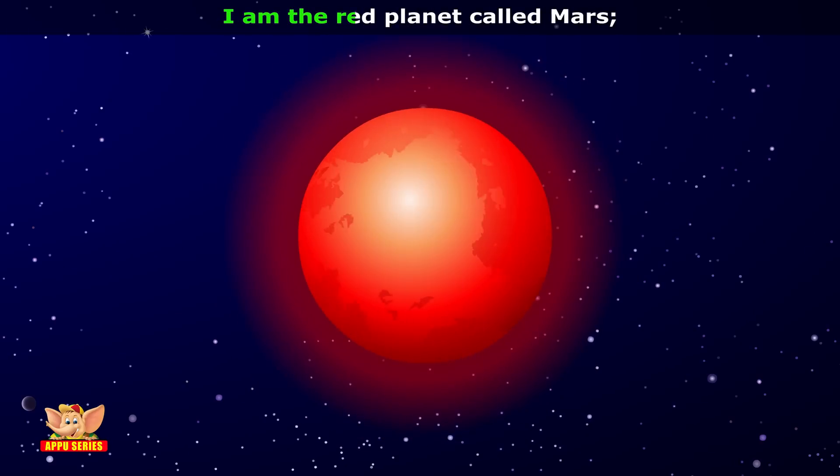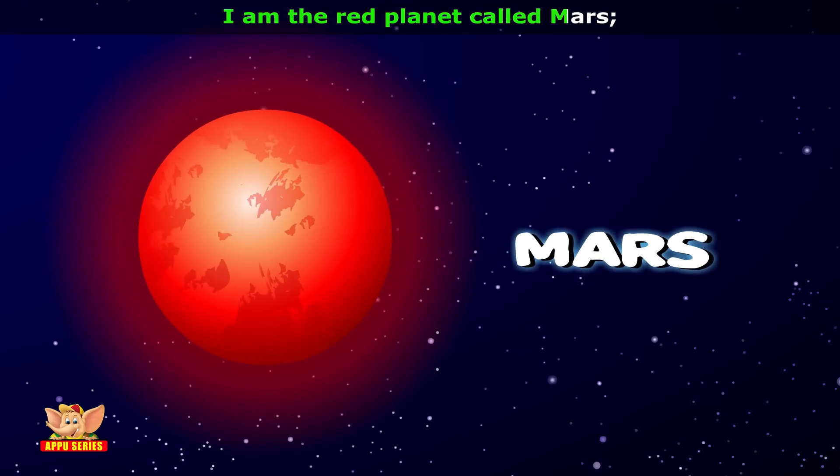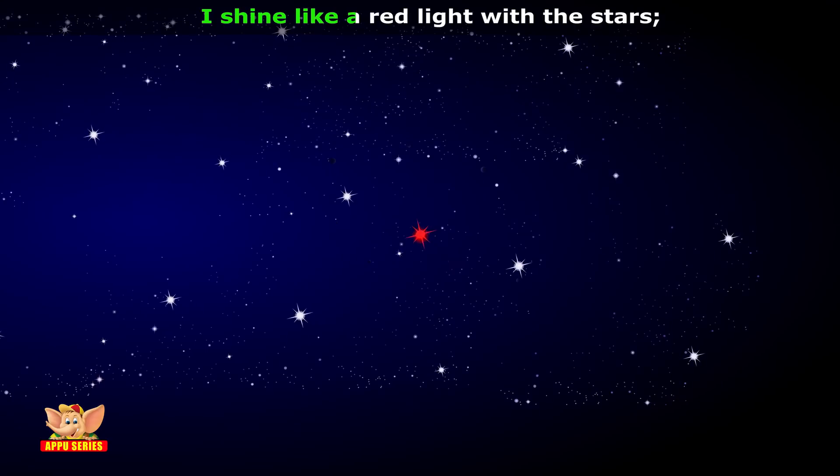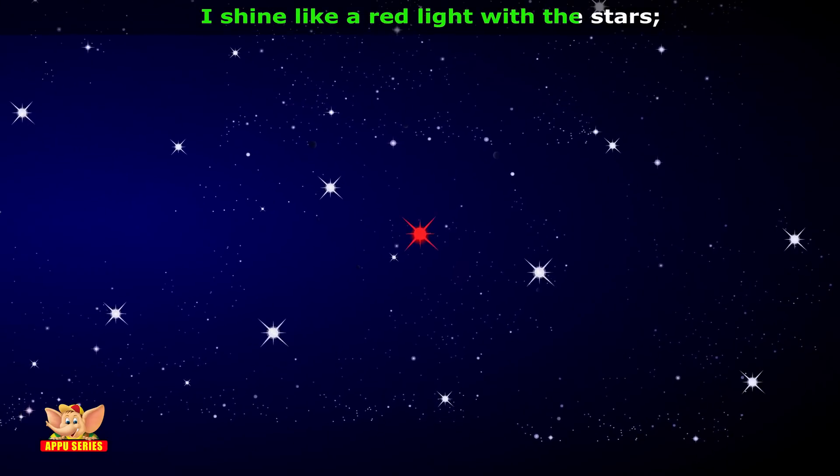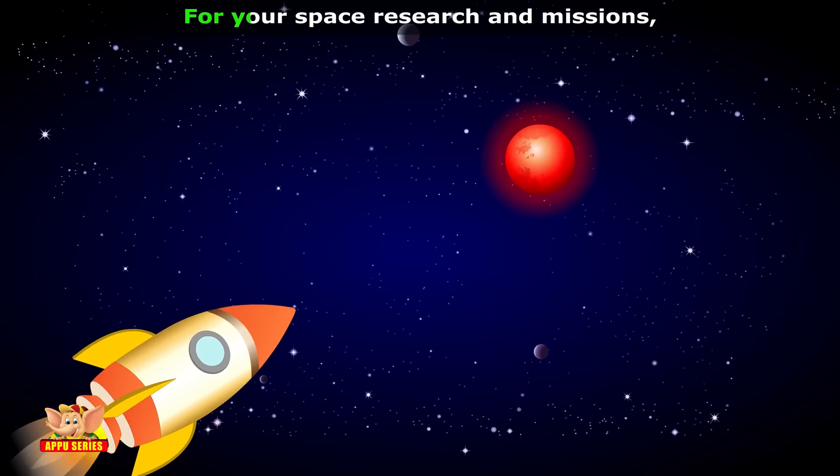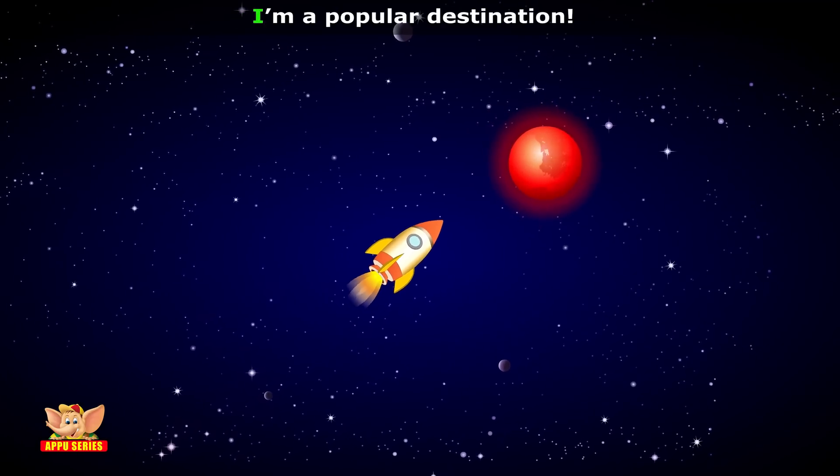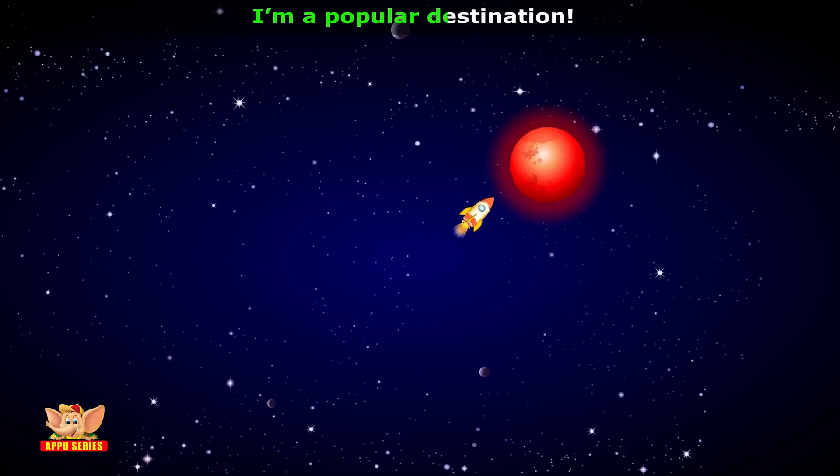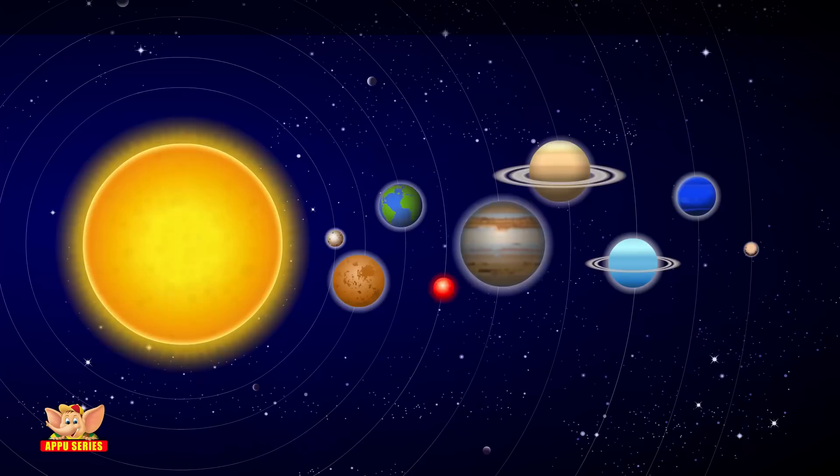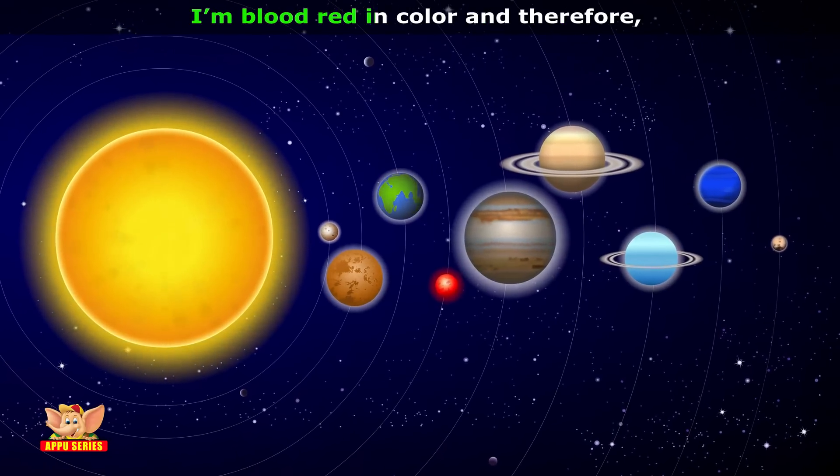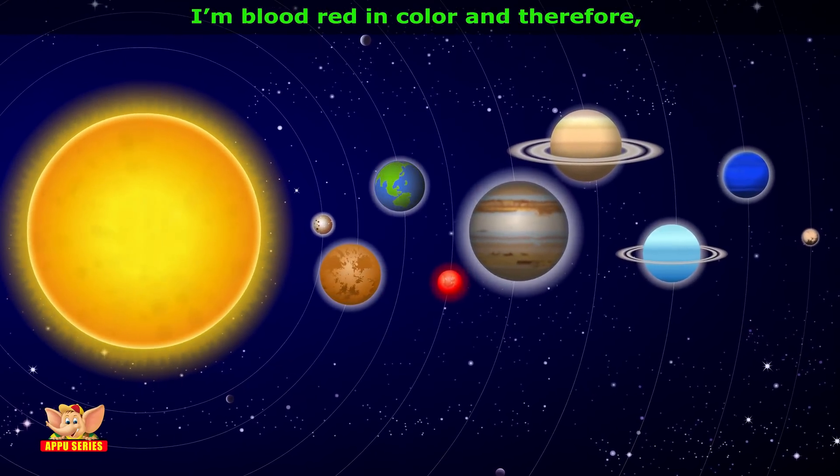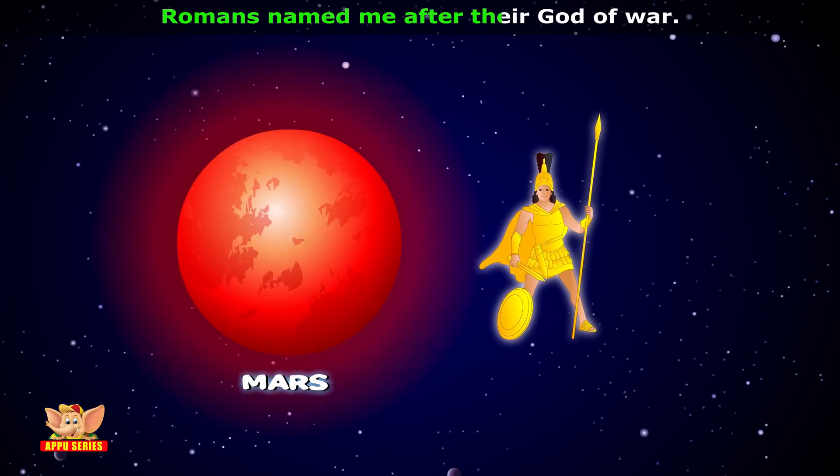I am the red planet called Mars. I shine like a red light with the stars. For your space research and missions, I am a popular destination. I'm blood red in color, and therefore, Romans named me after their